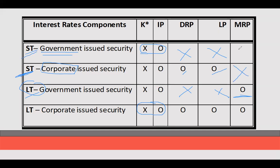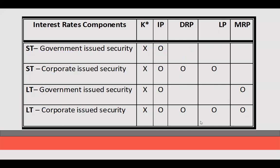Short-term government securities like treasury bills have no maturity risk premium. For long-term and corporate-issued securities, all components are included. Importantly, regardless of whether the security is government or corporate issued, the nominal risk-free rate — composed of the real risk-free rate and inflation premium — is always present as the minimum rate of return, to entice the investor to invest.